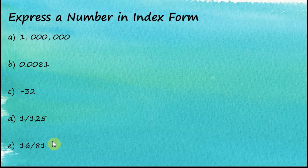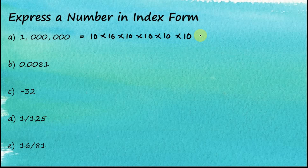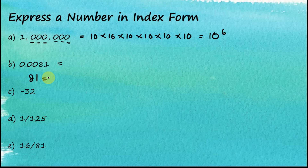Let's start with five numbers. The first one is 1 million. This one is easy because we can straight away tell that this is equal to 10 times 10 times 10 times 10 times 10 times 10 — six times, because we have six zeros here. So 10 multiplied by itself six times is equal to 10 to the power of 6.